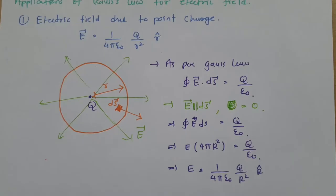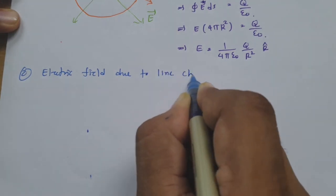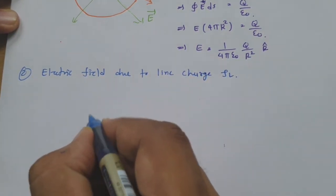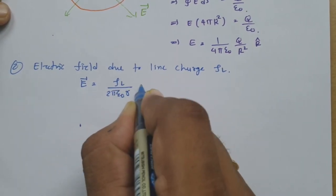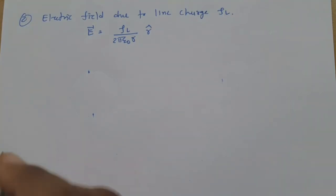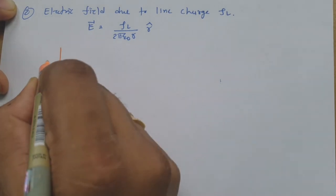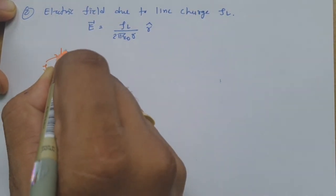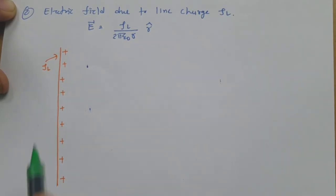Now let us have the second application: electric field due to line charge. We have already derived that the electric field due to a line charge is ρL / (2πε₀r) × r̂. Now let us derive this using Gauss's Law. We consider a line charge with line charge density ρL, which is positive. To apply Gauss's Law, we consider a cylindrical Gaussian surface around it.